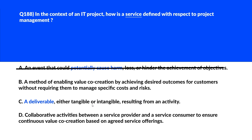Option C says a deliverable, either tangible or intangible, resulting from an activity — this describes a deliverable, but a service encompasses more than just deliverables, so this is wrong. Option D says collaborative activities between a service provider and a service consumer to ensure continuous value co-creation based on agreed service offerings — this focuses on the collaboration aspect rather than the definition of a service itself. We'll reject it and lock option B as the right choice.